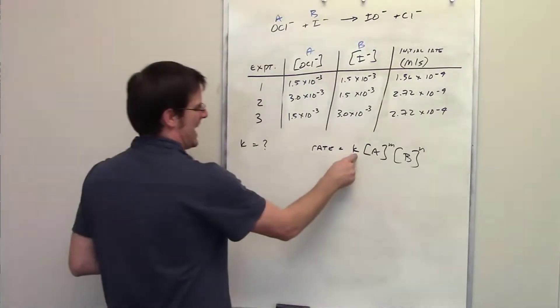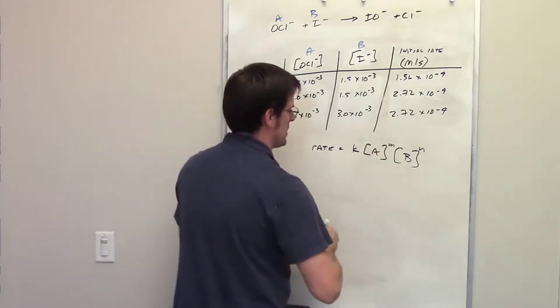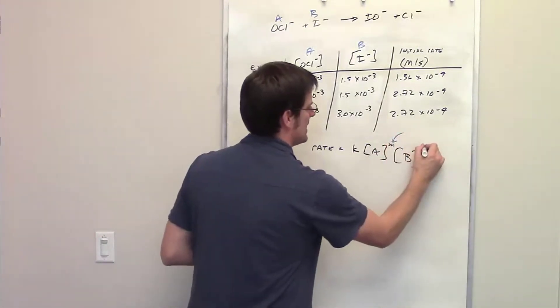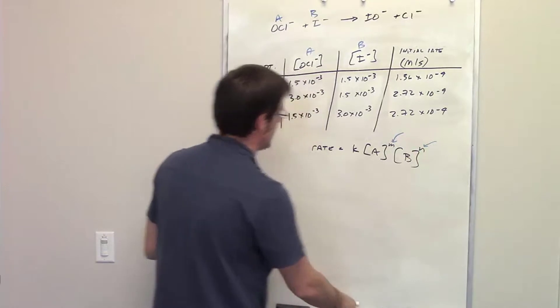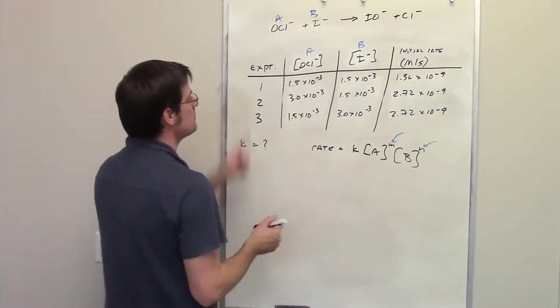So in order to determine what k is, we have to identify these exponents m and n. How in the world do we do that? Well we have to do that individually. Let's begin with component A.